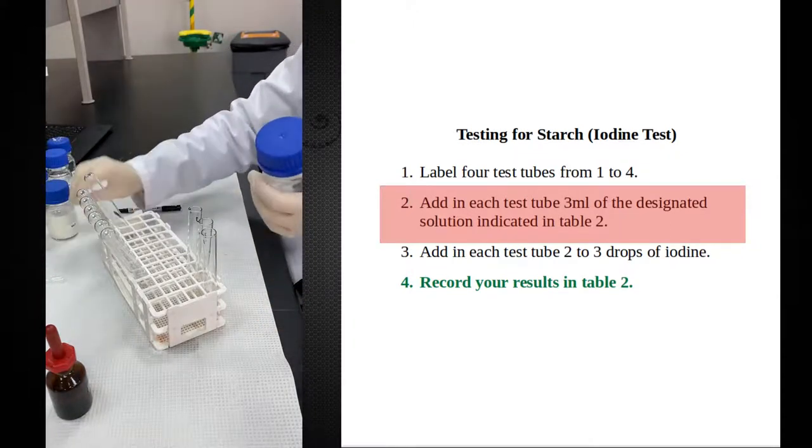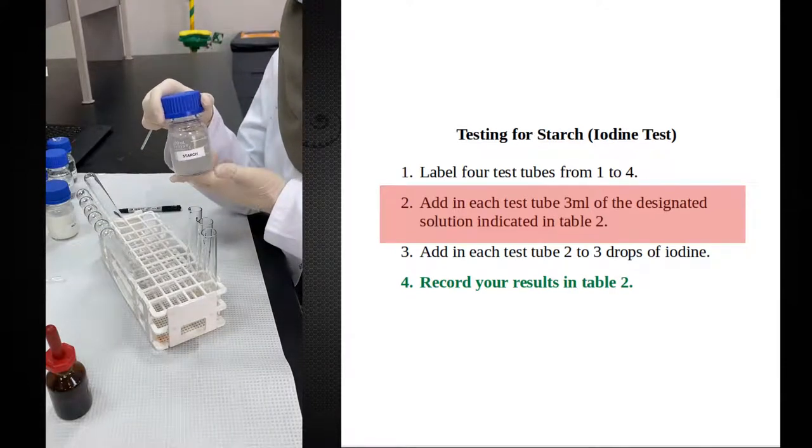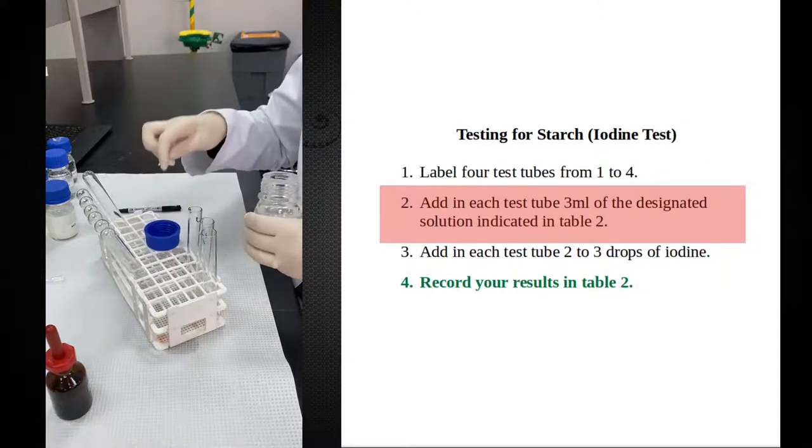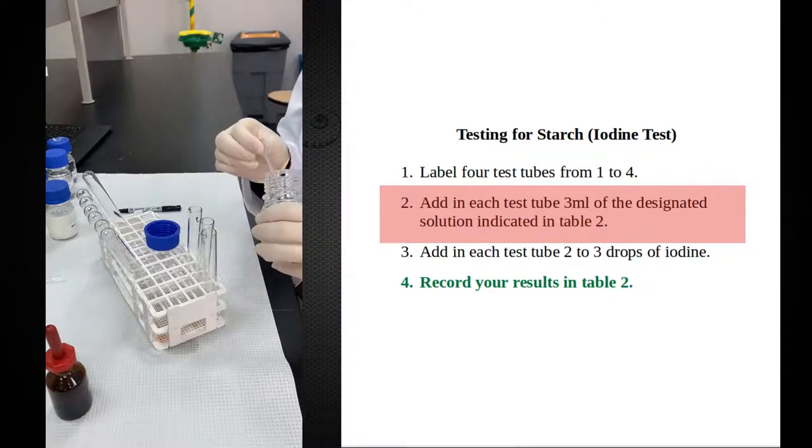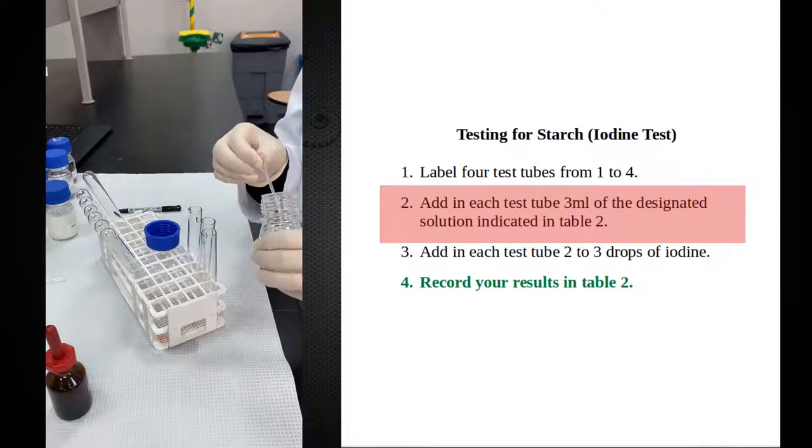In the next test tube, I will add, I need a positive control, and it's going to be a solution of starch. Starch solution is my positive control. So iodine is a test of starch, not for any polysaccharide. It's a test for starch.